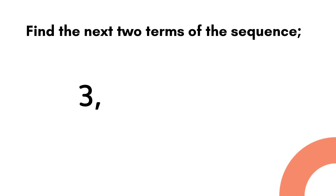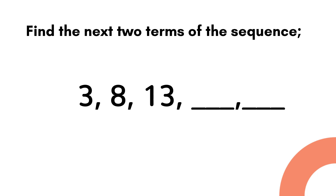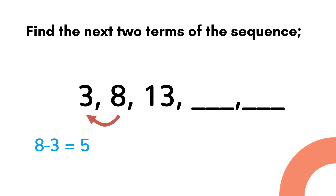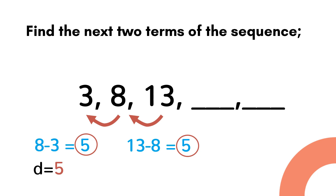Let's have an example. Find the next two terms of the sequence 3, 8, 13. First we have to subtract the consecutive terms: 8 minus 3 is equal to 5, and 13 minus 8 is equal to 5. So the common difference is equal to 5.